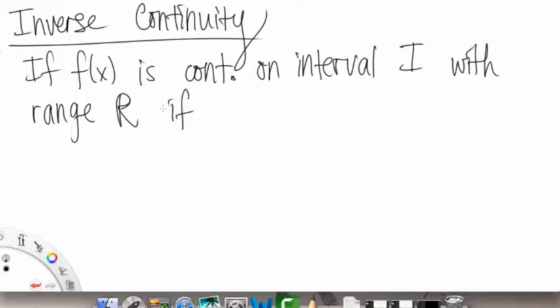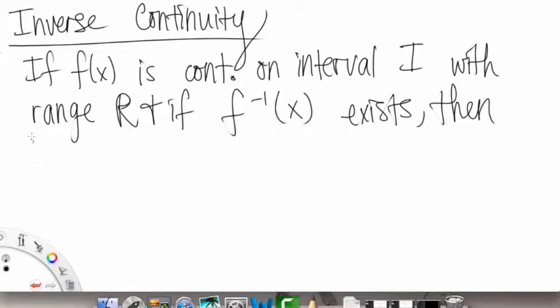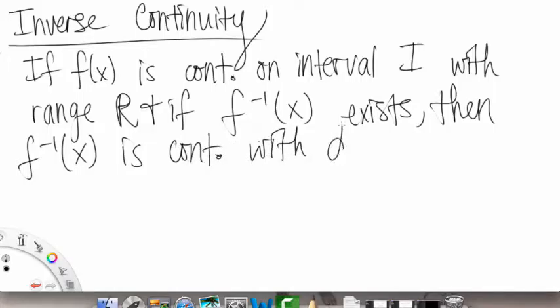and if f inverse of x exists, so if the inverse does exist, then we have, the inverse of f is continuous, continuous, with domain R, domain capital R. Okay, and so here's why.